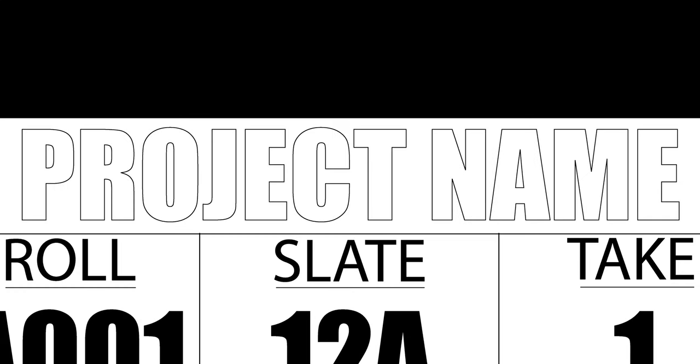Let's have a look at the slate itself and what information you have to put on there. Right at the top, you'll have the project name. This could be the title of the film or the title of the episode, whatever you want to identify your project as. If you're not too sure and it's not your project, just go by what it says on the call sheet.